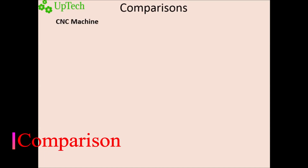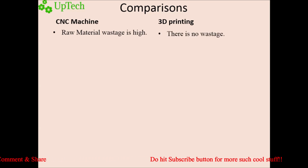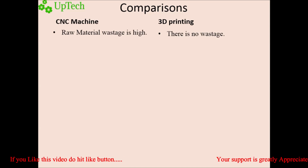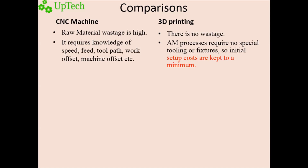As CNC machining and 3D printing are both best in their specific areas, here are some points of comparison. CNC machining is a subtractive process — a large amount of raw material is removed in the form of chips. In 3D printing, there is no such wastage because it is an additive process. In CNC machining, it is not easy to just download a 3D model and hit go — it requires knowledge of speed, feed, toolpath, work offset, machine offset, and many more. Whereas in 3D printing, it requires no special tooling or fixtures, so initial setup cost is kept to a minimum.